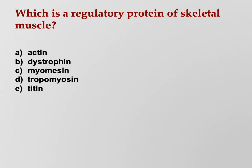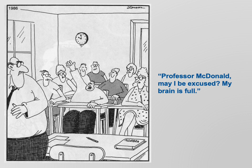Review question: which is a regulatory protein of skeletal muscle - actin, dystrophin, myosin, tropomyosin, or titin? Remember there are contractile proteins, regulatory proteins, and structural proteins - you need to know the difference and which ones are which. The answer is tropomyosin. Troponin and tropomyosin are the regulatory proteins - they switch contraction on and off. Actin and myosin are the contractile proteins. Dystrophin, myomesin, and titin are the structural proteins.